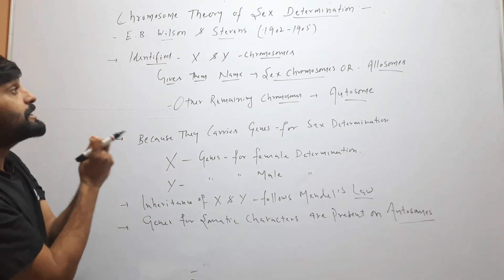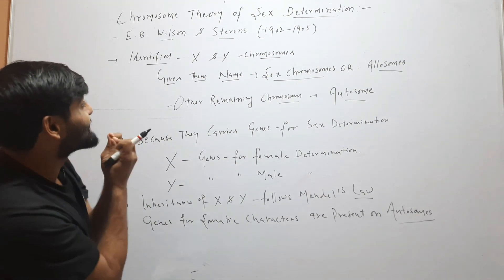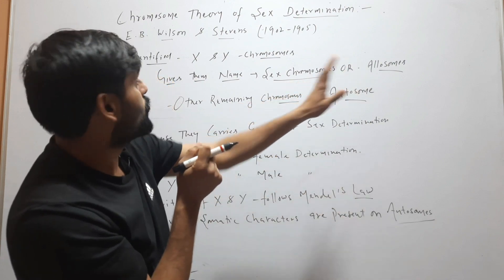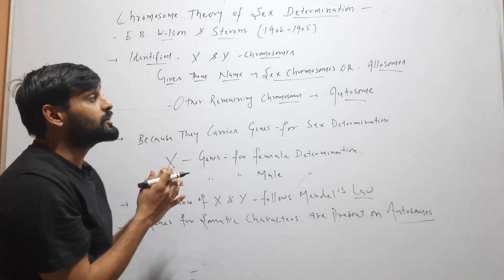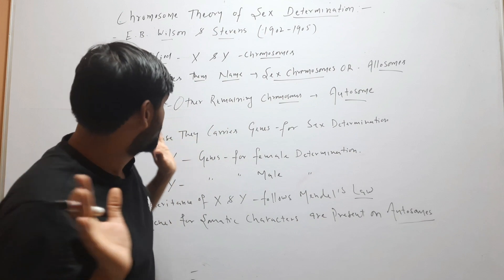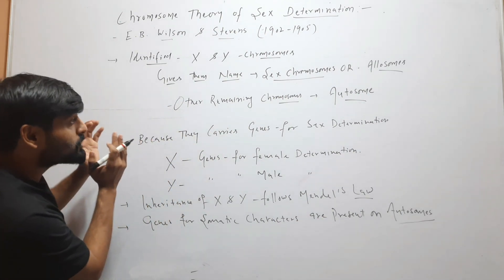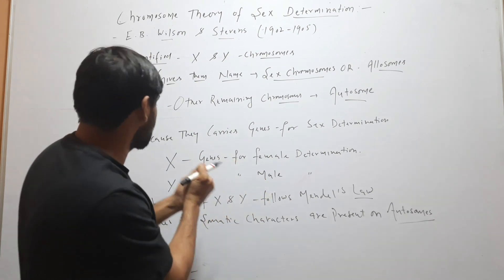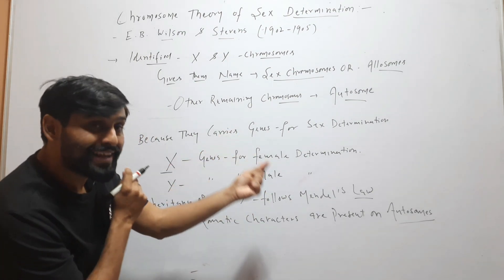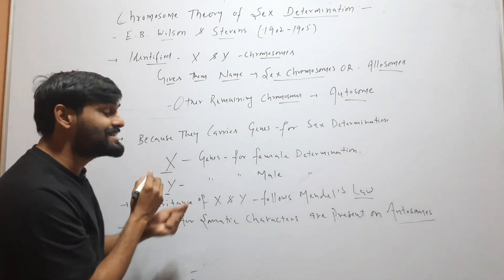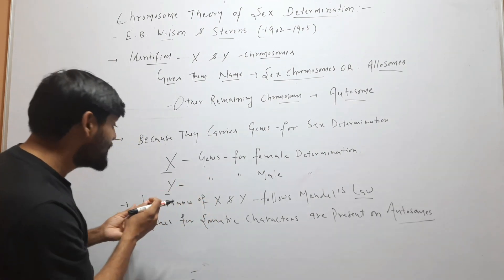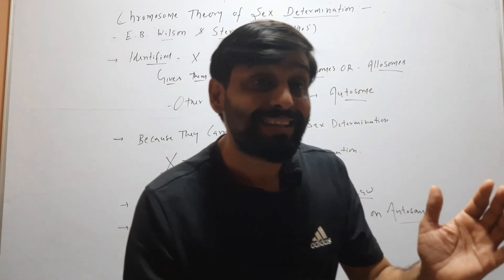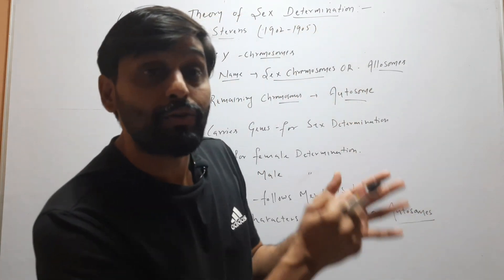They first identified X and Y chromosomes and gave them the name sex chromosomes, or allosomes. Other remaining chromosomes were called autosomes. They were called sex chromosomes because they have genes for sex determination — X for female determination and Y for male determination. Inheritance of X and Y follows Mendel's law.